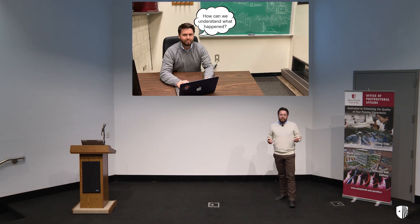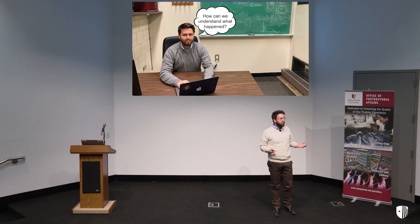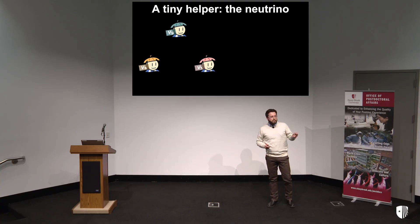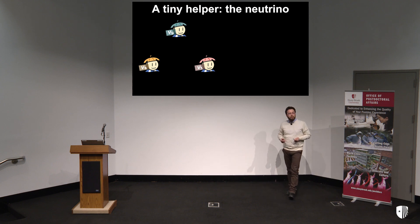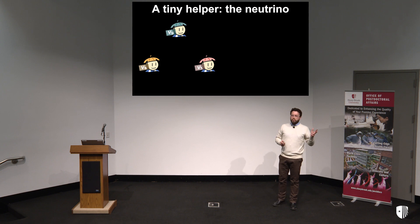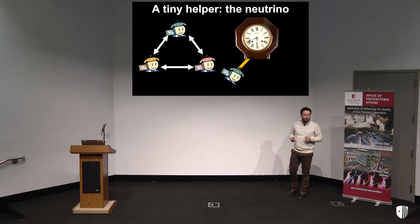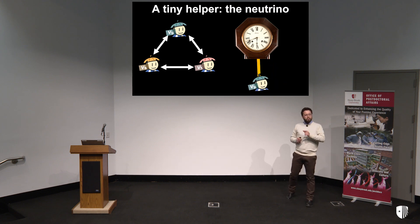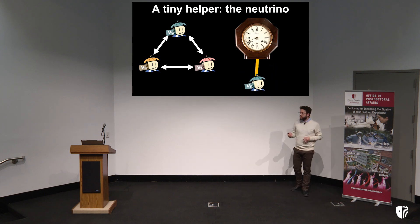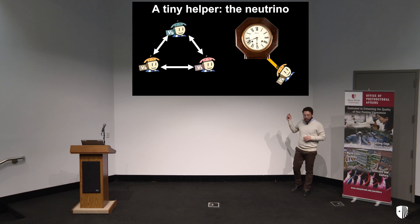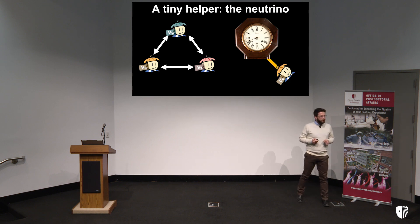But how can we understand what happened in the early stages of the Universe? Why did the Universe evolve in this way? One of the most fundamental building blocks of our Universe that can shed light on this intriguing mystery is the Neutrino. There are three types of neutrinos in nature, and they can transform one into another while they travel from one place to another. This phenomenon is called by physicists Neutrino oscillations.